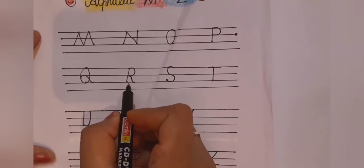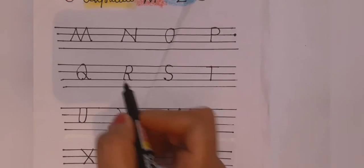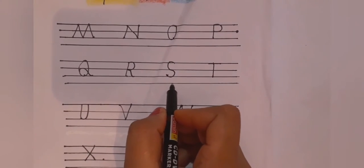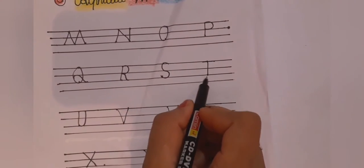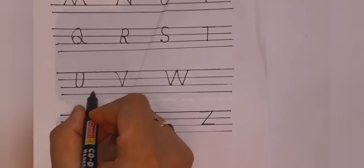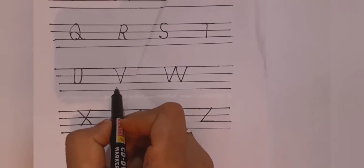R for rose. S for shape. T for tiger. U for umbrella. V for van.